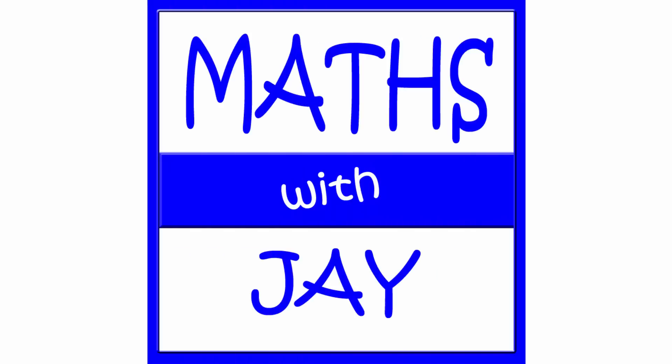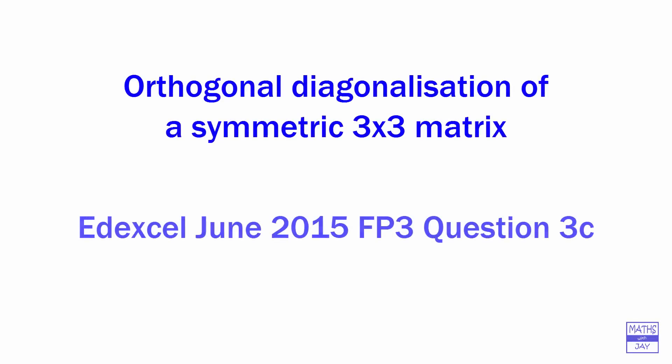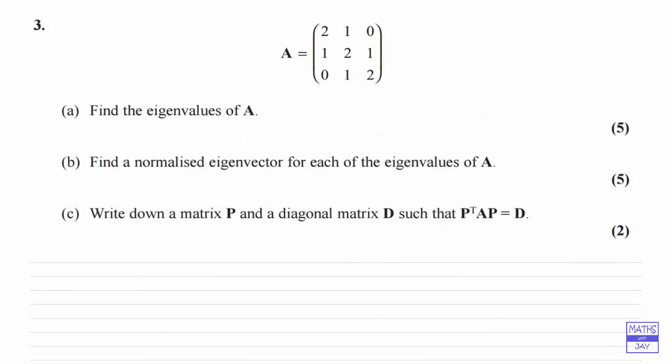Hello, welcome to Maths with Jay. Now we've already worked through the hard parts of this question. You can see that parts A and B were worth five marks each, so we've done the hard work.